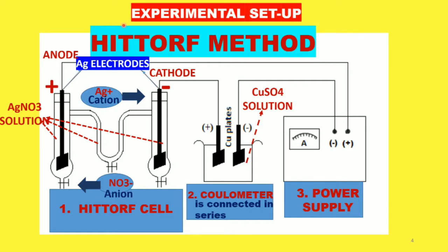The experimental setup for the Hittorf method, shown in the diagram, consists of three components: an electrolytic cell, a coulometer, and a power supply. The Hittorf electrolytic cell consists of three compartments — the anodic compartment, the middle compartment, and the cathodic compartment — and contains two electrodes.